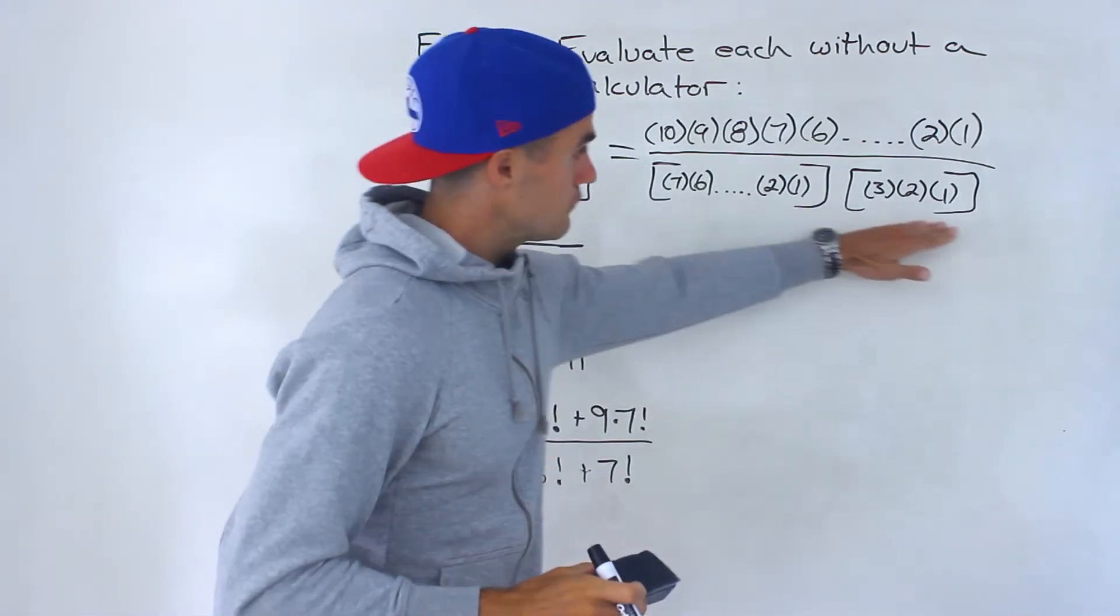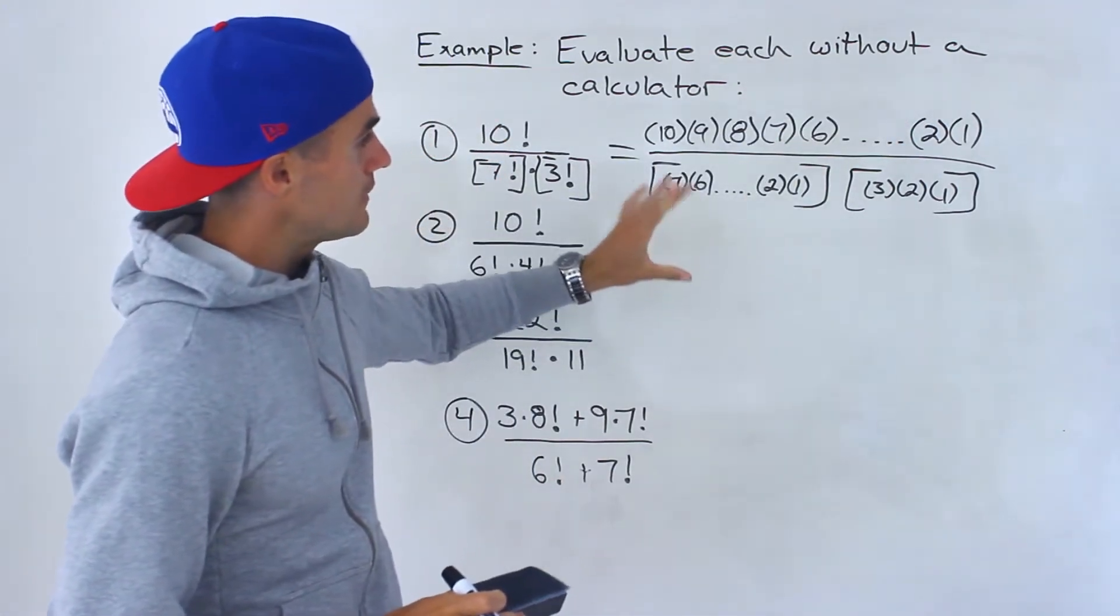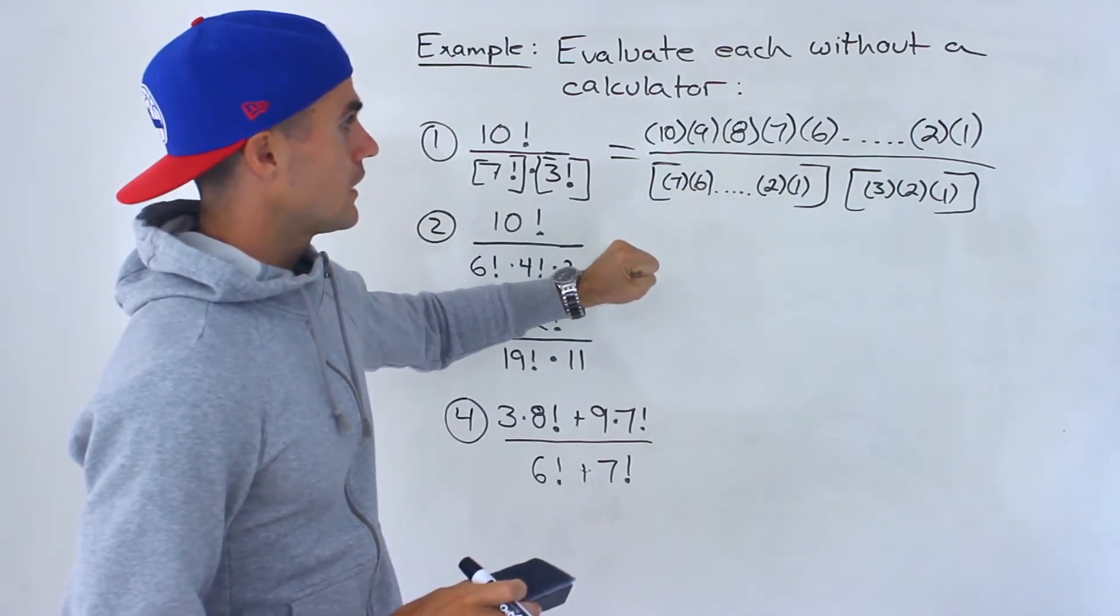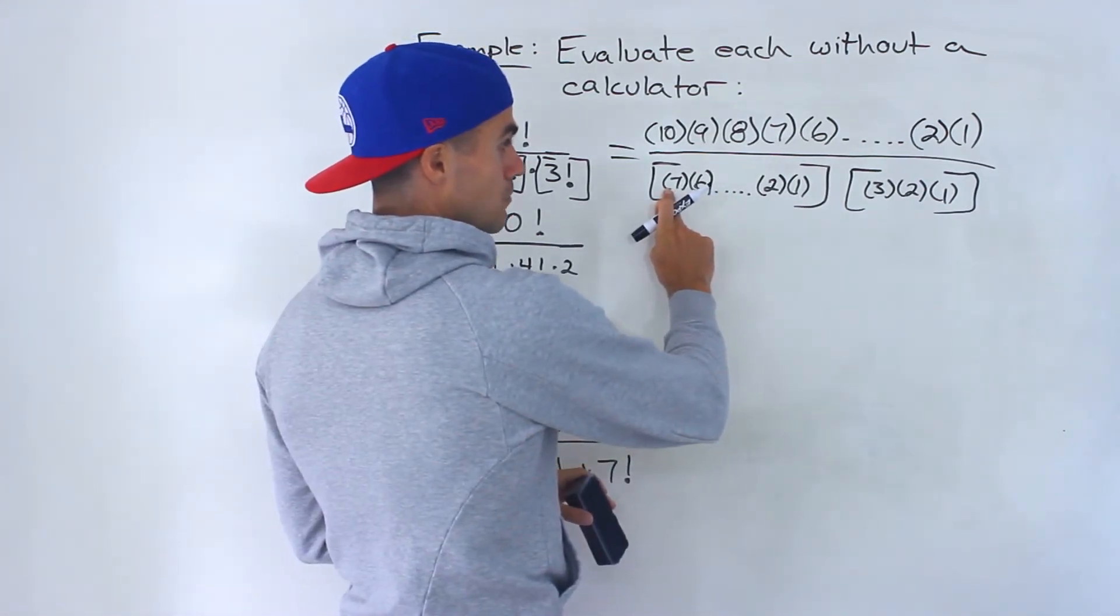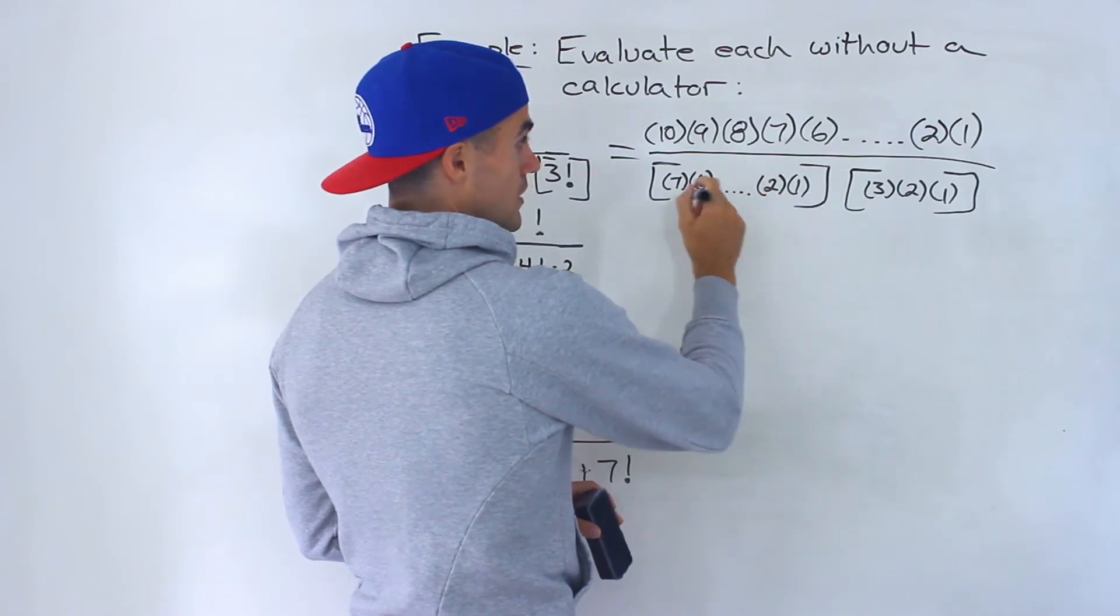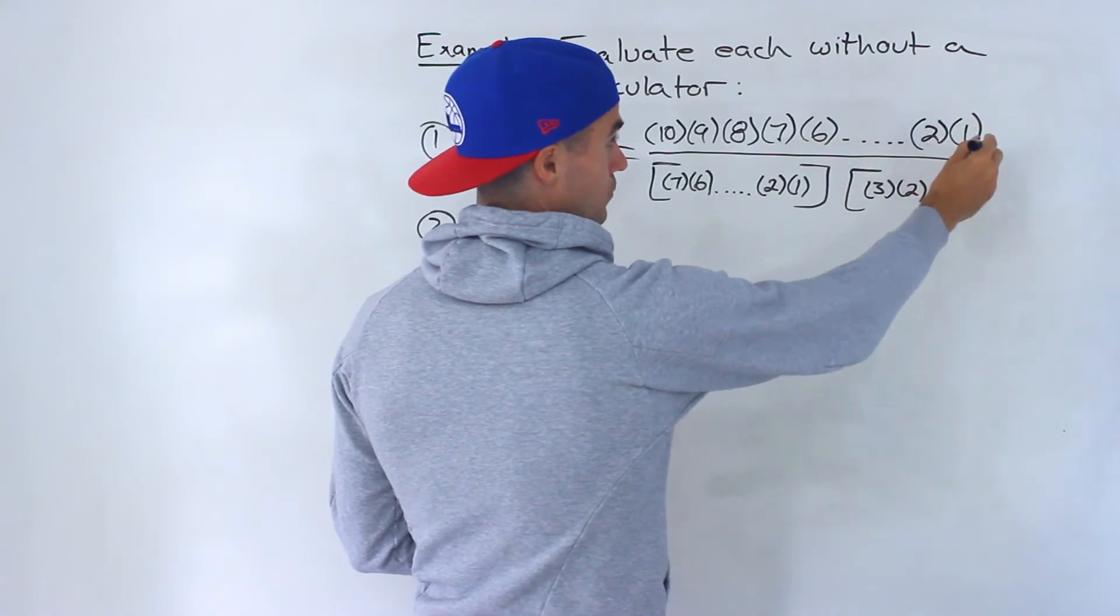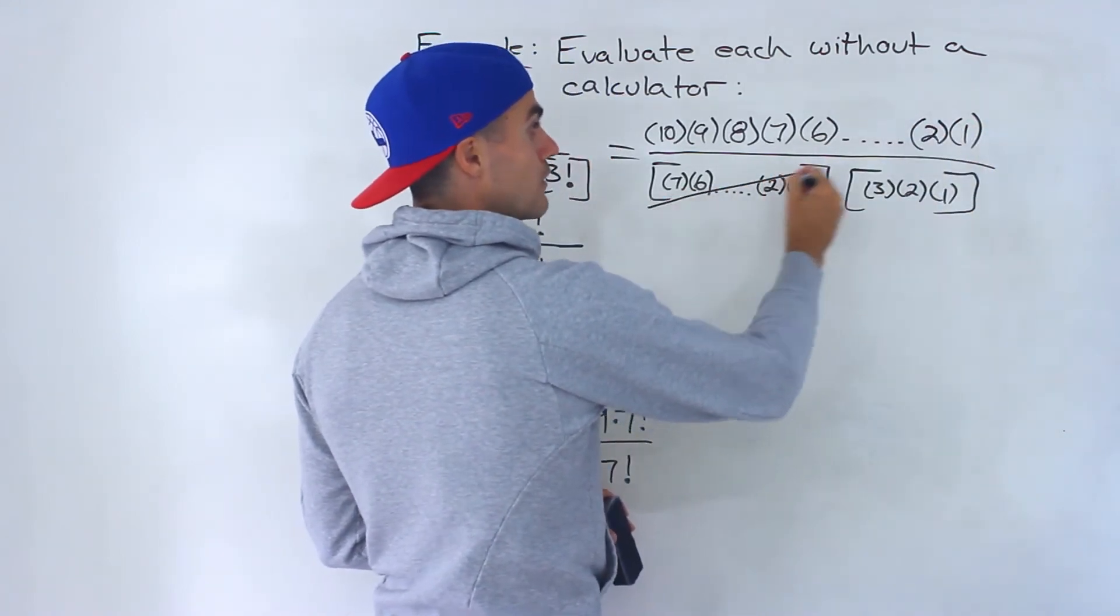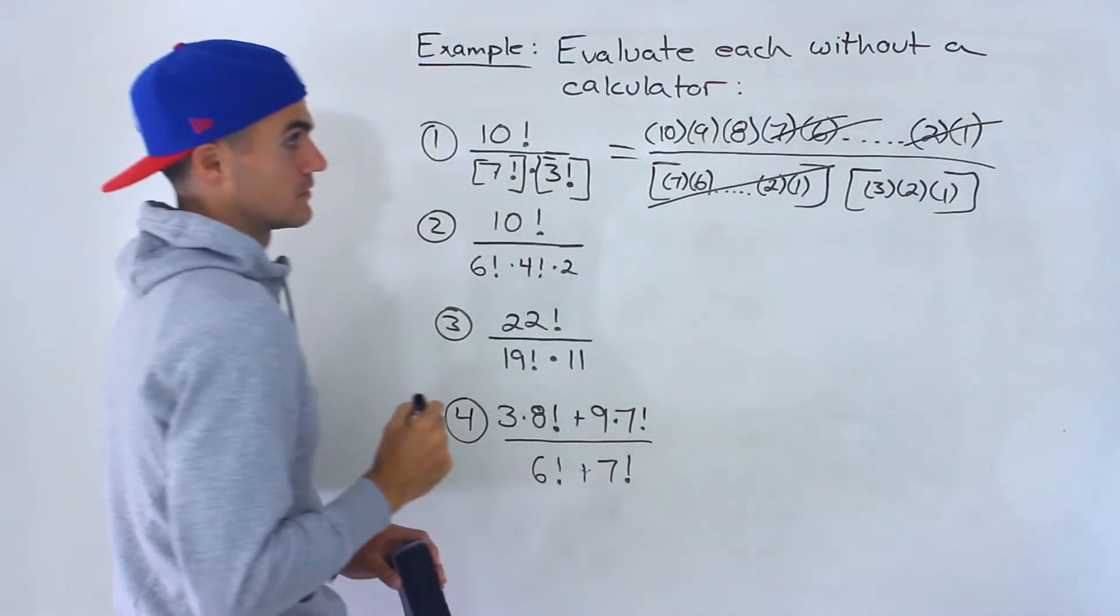So multiplying everything up top. From here, you can look for things you can cancel out. Notice we're multiplying 7, 6, all the way to 1. We're doing the same thing here - 7, 6, 5, 4, 3, 2, 1. So we can cancel out this whole bracket and this portion right there.